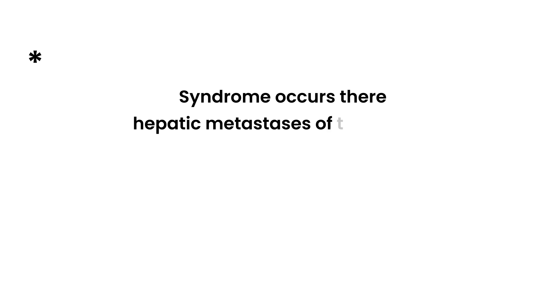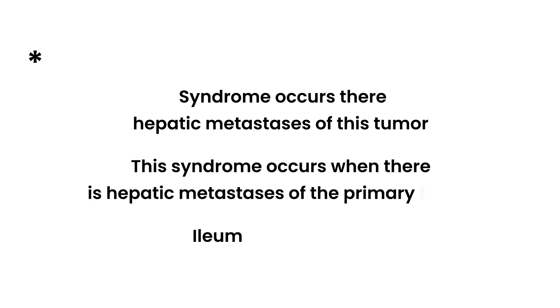There's a very key point here: this syndrome only happens when the primary tumor metastasizes to the liver. So for example, a carcinoid tumor that originally originated in the ileum travels to the liver, and when it reaches the liver, that's when this syndrome occurs.